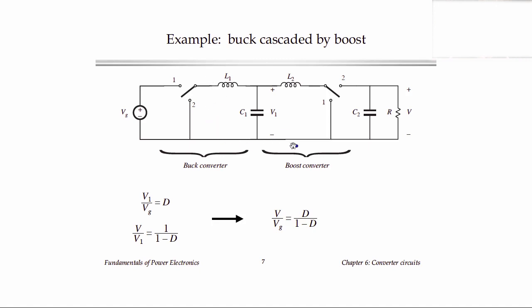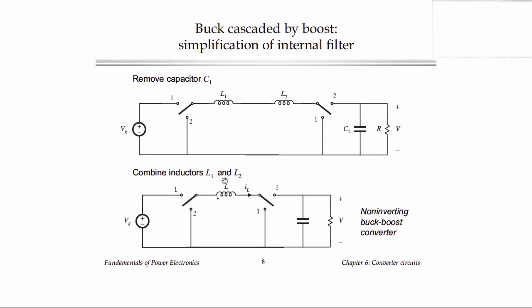There are some things we can do to simplify this circuit. Looking at the inner part of the circuit, we have a three-pole low-pass filter: an inductor, then a capacitor, then another inductor filtering the ripple. We can reduce the order of this low-pass filter and the basic DC waveforms will be unchanged — changing the filter order merely changes how it filters the ripple. So we can remove C1. Once we've done that, we have two inductors in series and we can combine them into one inductor, equal to the sum of the two inductances.